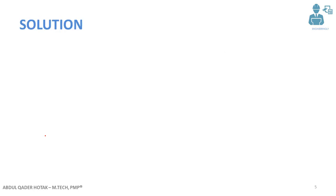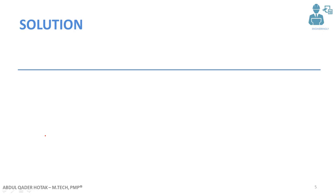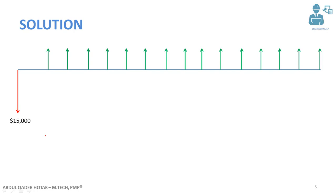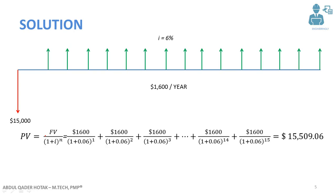So let's come to the solution. First of all we will draw the cash flow diagram. The cash flow diagram represents the total outgoing money and incoming money. We draw a straight line; the outgoing money will be shown in red, which is $1,600 per year with an interest rate of 6%.